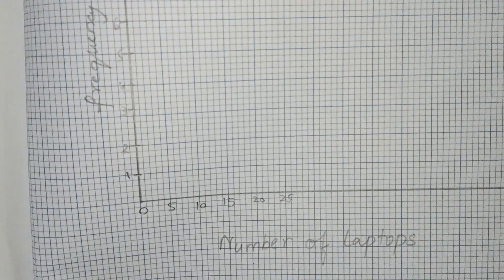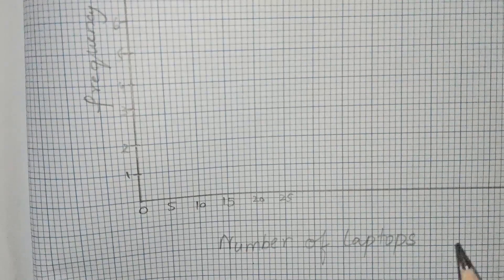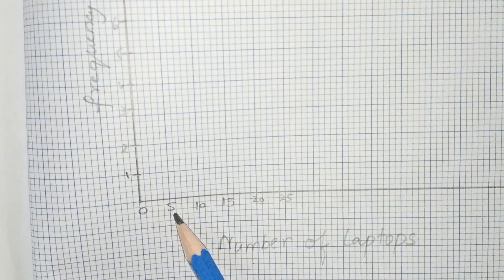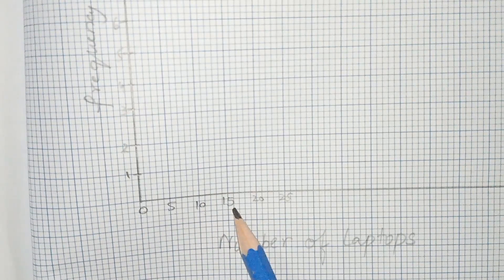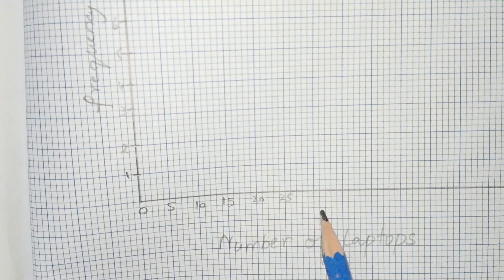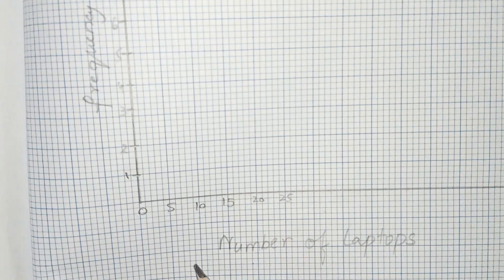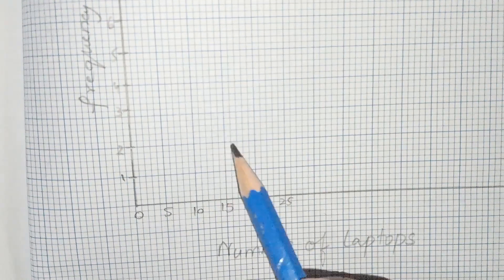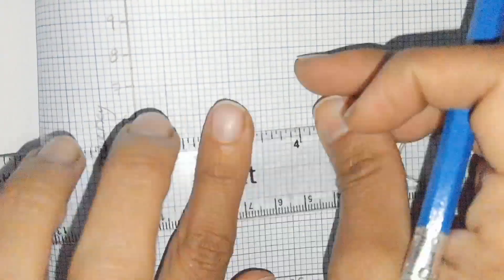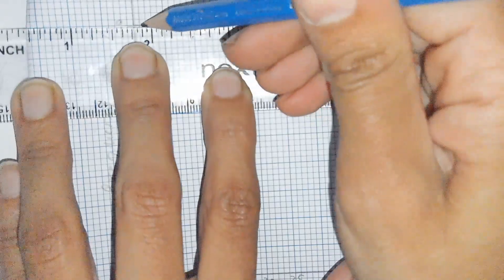I take the number of laptops along the x-axis and the frequency along the y-axis. The groups provided in the question are zero to five, five to ten, ten to fifteen. Now we draw the histogram. From zero to five, the frequency is nine, so we draw that bar up to nine.